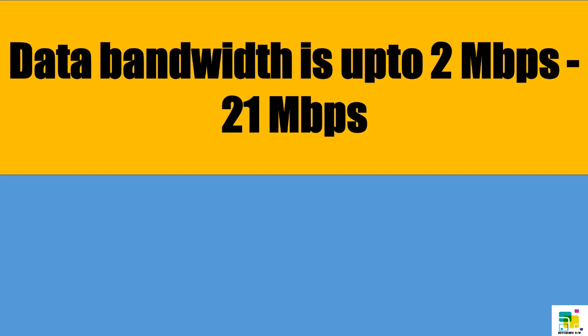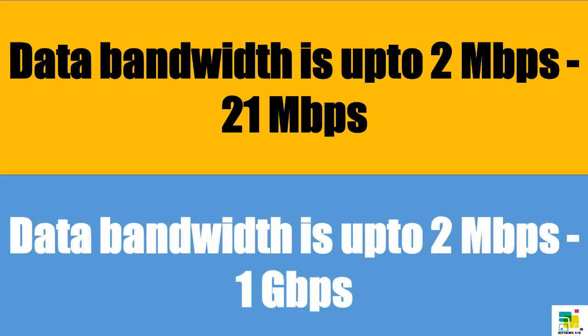In 3G, data bandwidth is up to 2 Mbps to 21 Mbps. And in 4G, data bandwidth is up to 2 Mbps to 1 Gbps.